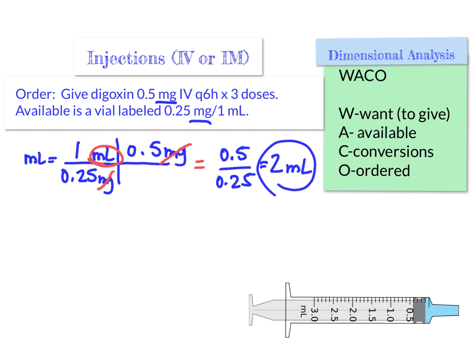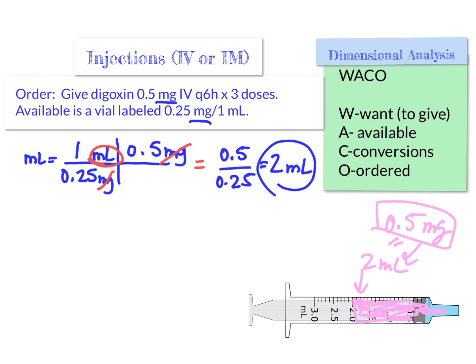We pull up our syringe to 2 mL, and that gives us what was ordered by the doctor. So we give 2 mL liquid, which equals 0.5 milligrams — just like the doctor ordered — because this is the concentration of the medication in liquid format. That's how you do dimensional analysis for IV or IM liquid dosing.